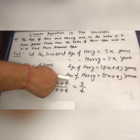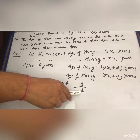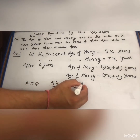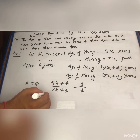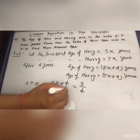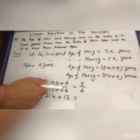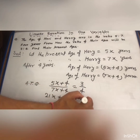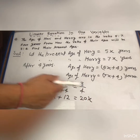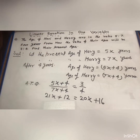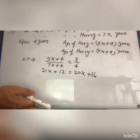Now cross multiply: (5x + 4) multiplied by 4, and (7x + 4) multiplied by 3. So on the left side: 7x into 3 gives 21x, and 4 into 3 gives 12. On the right side: 4 into 5x gives 20x, and 4 into 4 gives 16. Now transpose all variables to the left side and numbers to the right side.